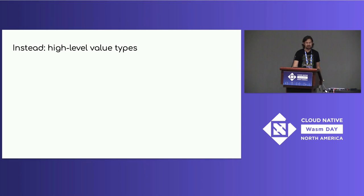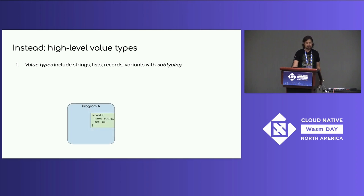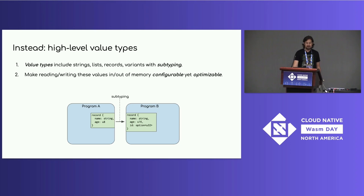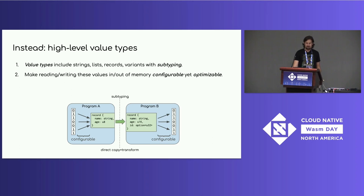Instead, we're proposing to have high-level value types. We start with value types like strings, lists, records, and variants, and add subtyping. Program A can output an abstract record with two fields, and program B can take the same record or a subtype — for example, with an optional extra field — allowing us to evolve interfaces over time. We make reading and writing these values in and out of linear memory configurable yet optimizable. Program A gets to choose the string encoding — whether UTF-8 or UTF-16 — and an AOT compiler can compile this down to a direct copy and transform directly from A's linear memory into B's linear memory.